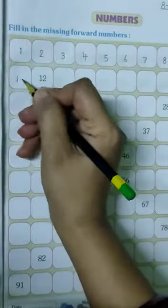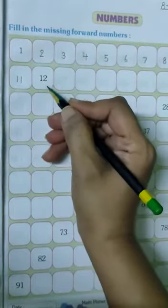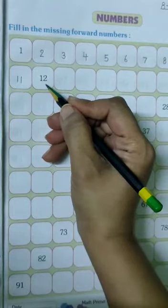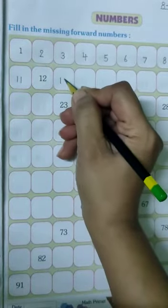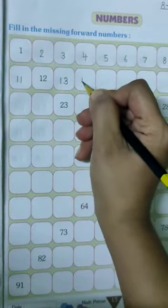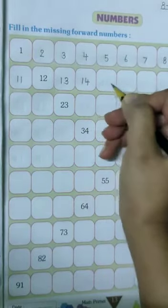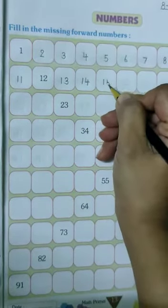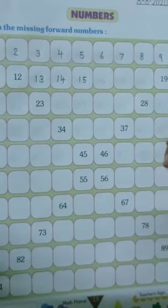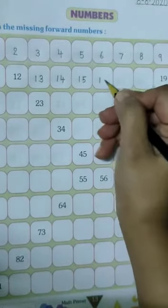write 11 in this box. Now 12 is also written here. So write 13, then 14, 15, and after 15, write 16, 17,